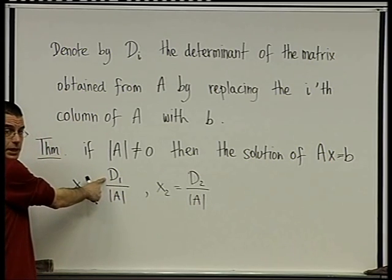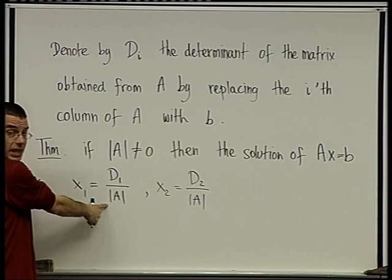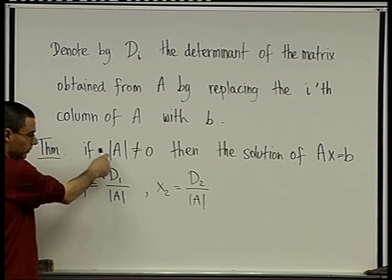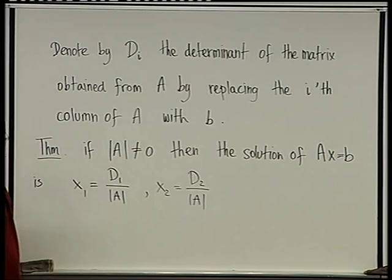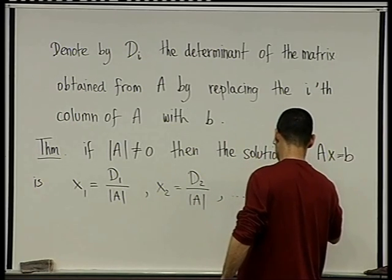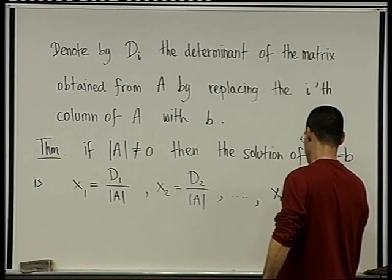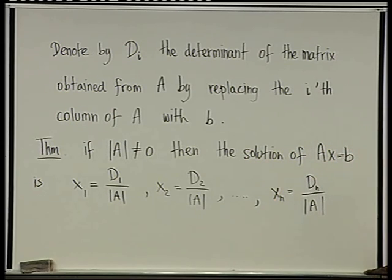D1 is a number. It's an n by n determinant. The determinant of A is again a number, a non-zero one. And therefore this is just a quotient of two numbers. It's a number. And we have n of them and together they form the solution. This is Cramer's rule.